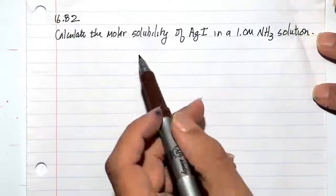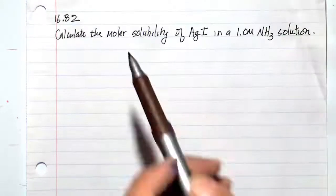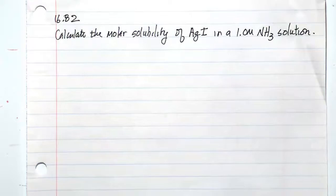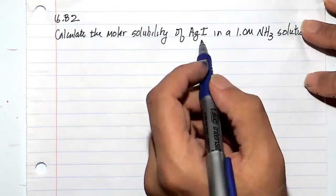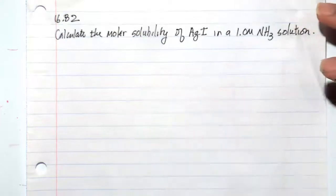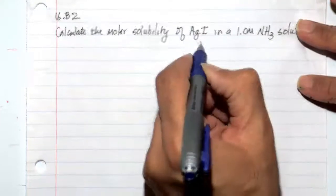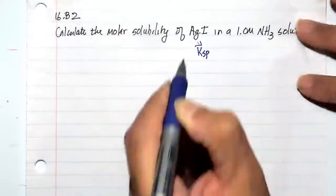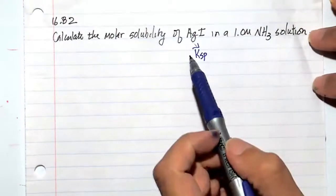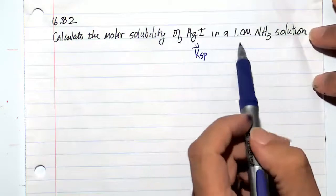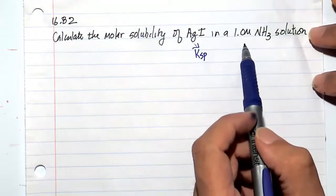In this video, we are asked to calculate the molar solubility of AgI in one molar ammonia solution. There are two equilibrium reactions that are actually occurring here. One of them is the Ksp of AgI, and that's going to be an equilibrium with Ag⁺ and I⁻. So here we have the Ksp equation, and then immediately the Ag⁺ that is formed can form a complex ion with ammonia.